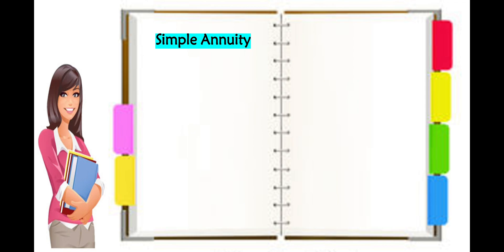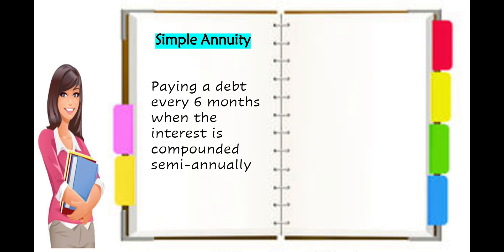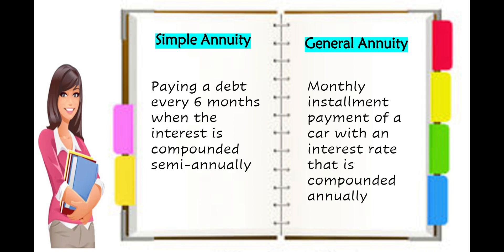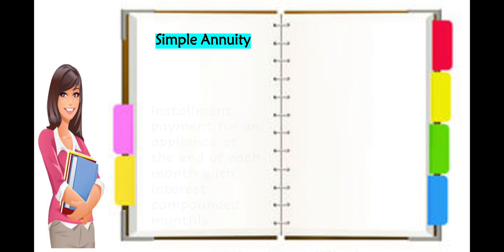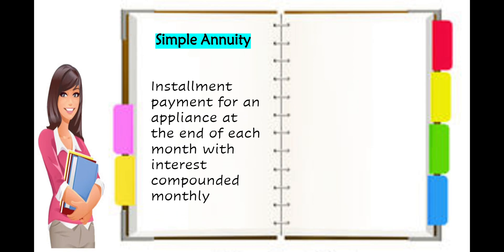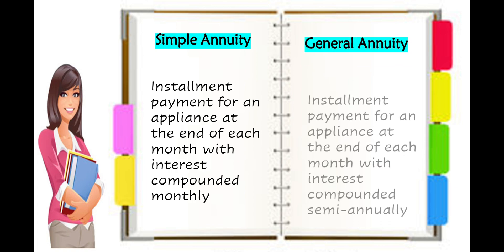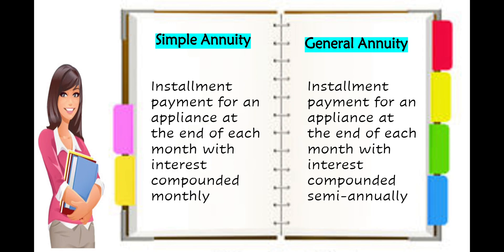Another example for simple annuity: paying a debt every six months when the interest is compounded semi-annually — six months and semi-annually are the same. For general annuity: the monthly installment payment of a car with an interest rate compounded annually — you are paying monthly but the interest is compounded annually, so they are not the same. For simple annuity: installment payment for an appliance at the end of each month with interest compounded monthly — both monthly, so they are the same. For general annuity: installment payment for an appliance at the end of each month with interest compounded semi-annually — monthly versus semi-annually, so they are not the same.